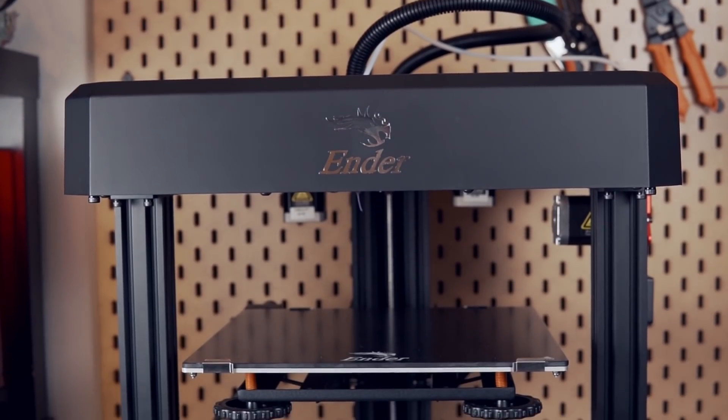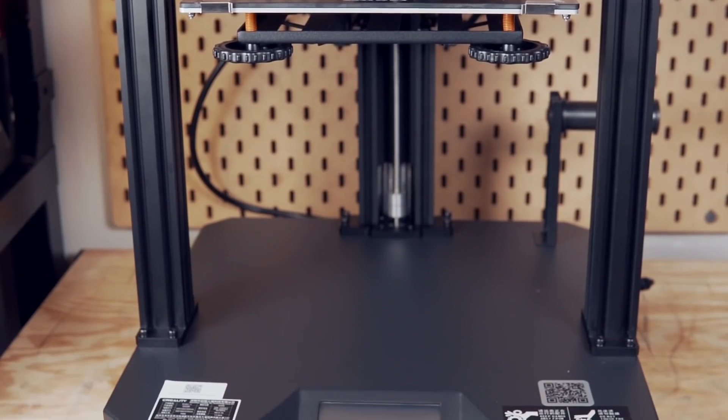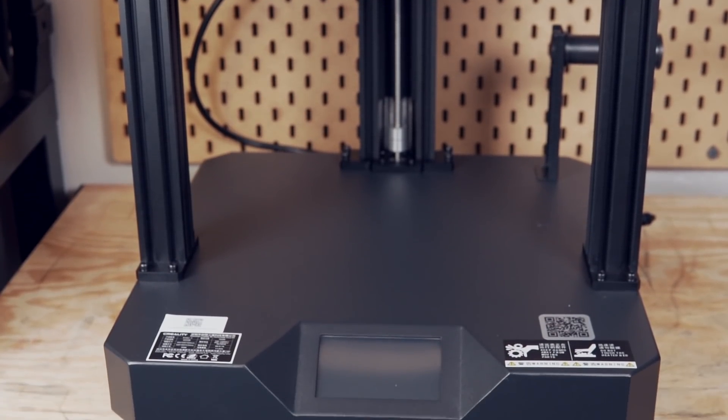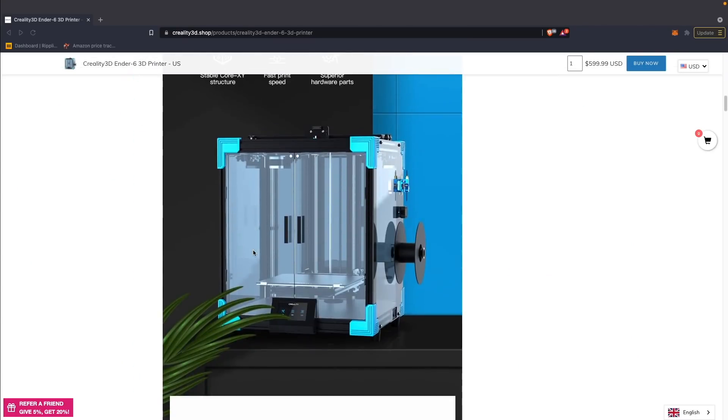Starting off, let's run through the specs of the Ender 7. The Ender 7 has a build volume of 250 by 250 by 300 millimeters and uses a Core XY motion system, which is something that I'm really excited to see. It is Creality's second Core XY machine with the first one being their Ender 6.